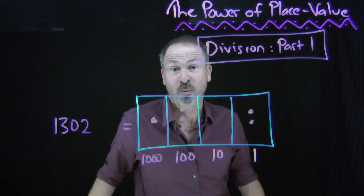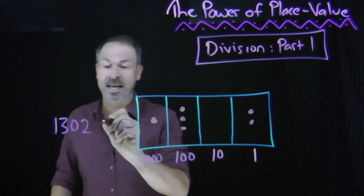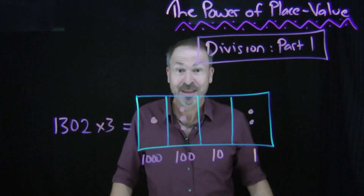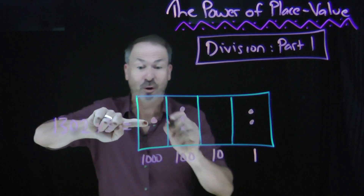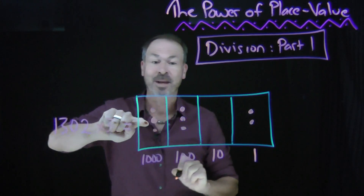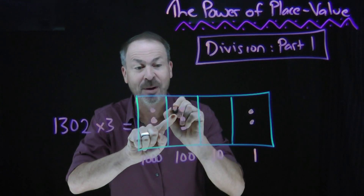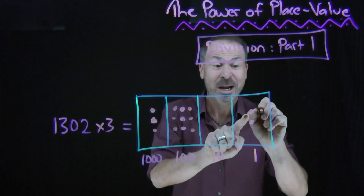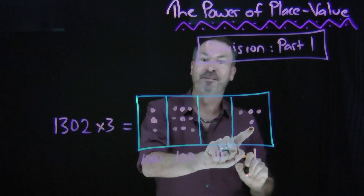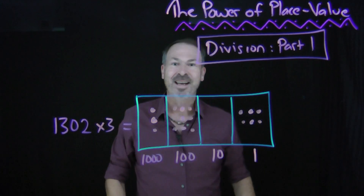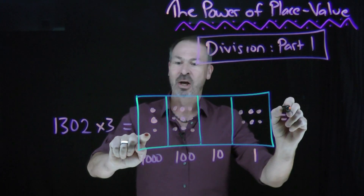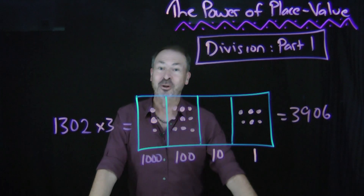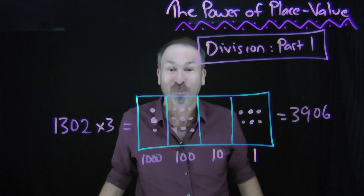Alright, so let's have some fun. Let's do some arithmetic on this number. Suppose I was asked to triple it — what would I have to do? Well, I would literally triple everything I see. Each dot gets tripled and becomes three dots. And now I see the answer is three thousand nine hundred and six. One thousand three hundred and two tripled is three thousand nine hundred and six.